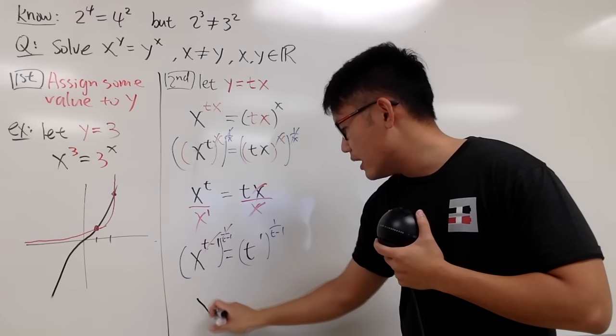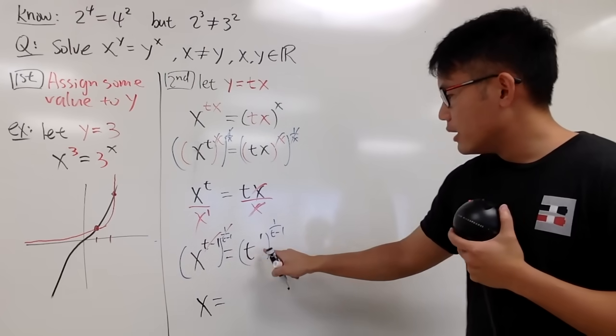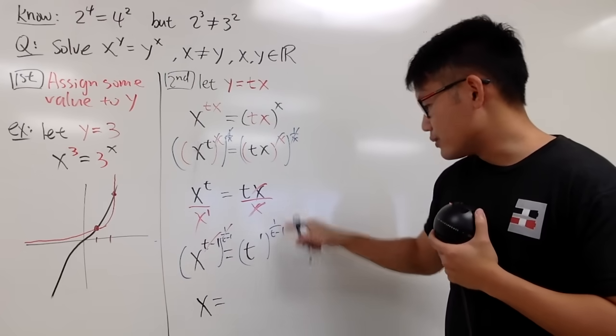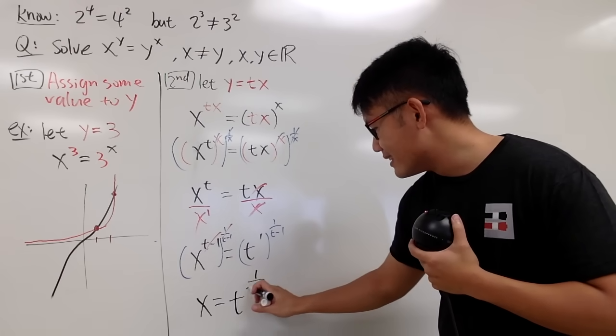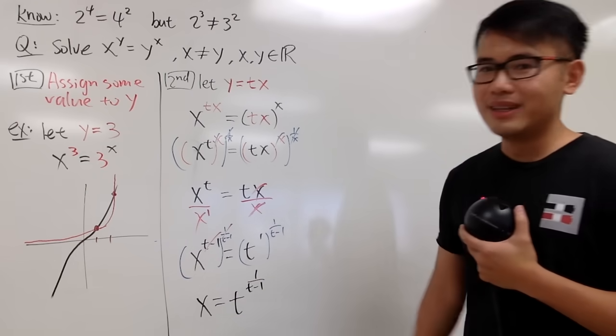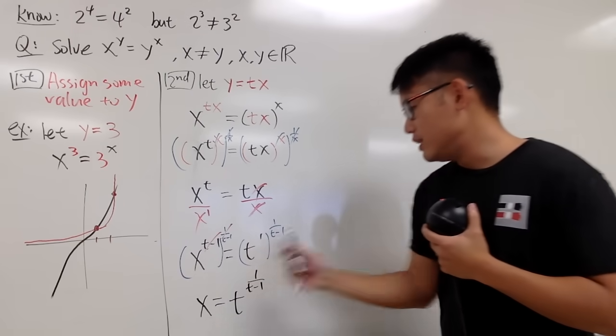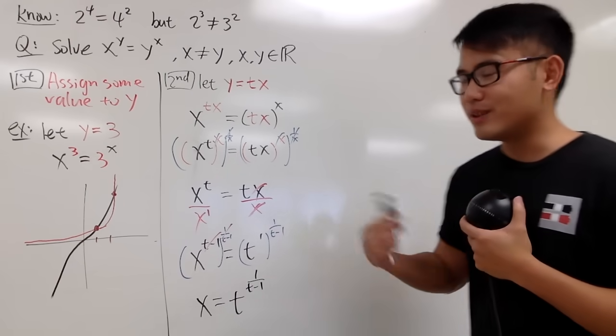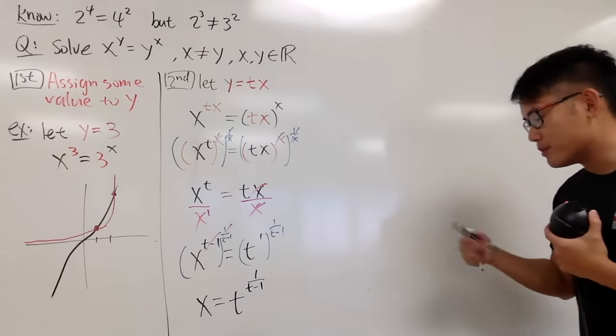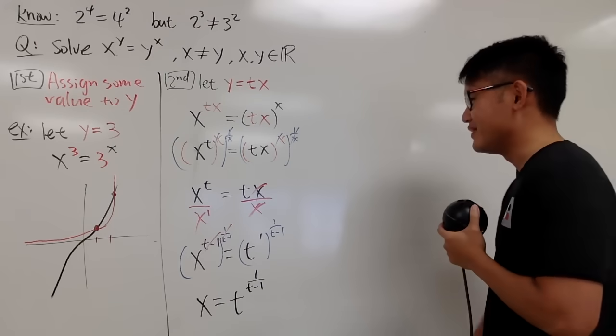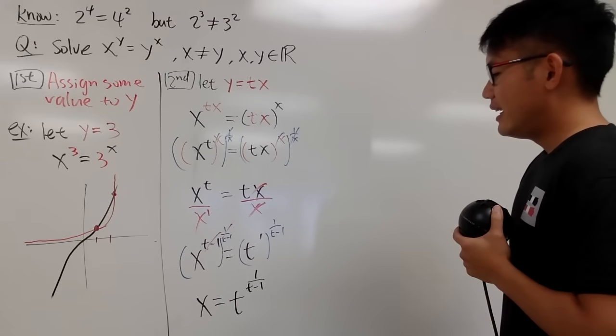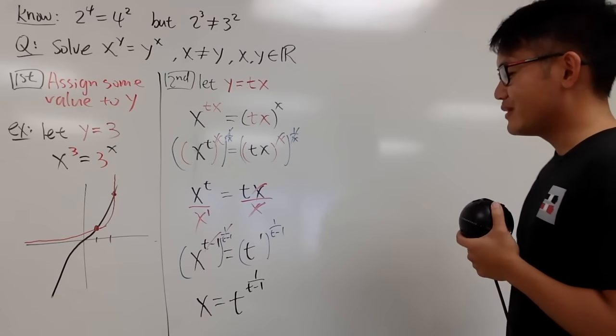And then you get x equal to t to the first time, raised to that, so you just multiply the powers. You get t for the base, and then 1 over t minus 1 power. And this is the first equation for the x, just like the usual parameter equations. In calculus 2, pre-calculus if you haven't done that. And that's nice.